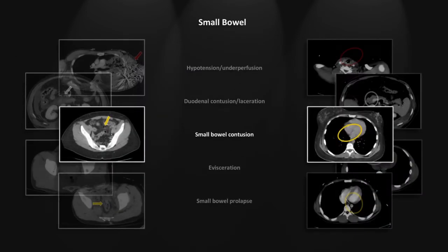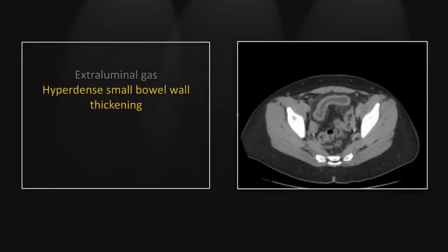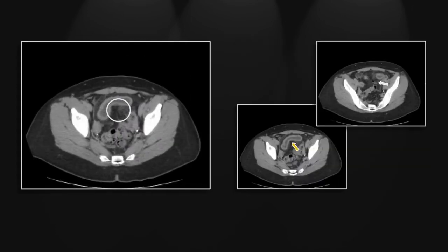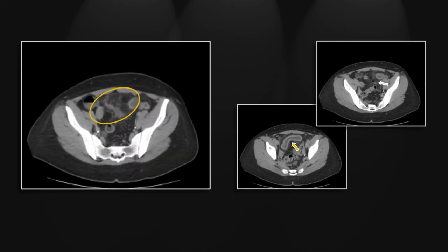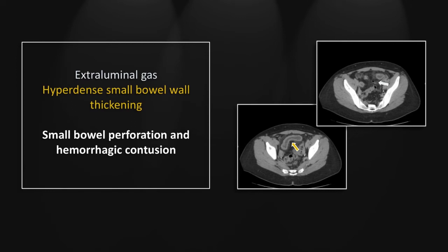Our next case is a small bowel contusion. You can see a small focus of extraluminal gas as well as mesenteric stranding. There is a moderate segment of wall thickening which is hyperdense, which could represent a contused or hemorrhagic small bowel. Here is that small focus of extraluminal gas and that segment of hyperdense wall thickening. That is a case of a small bowel perforation and hemorrhagic contusion.